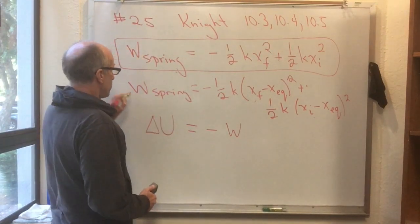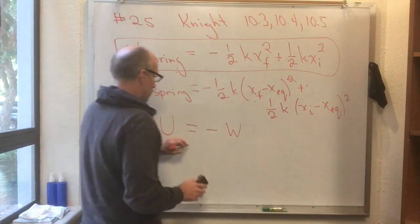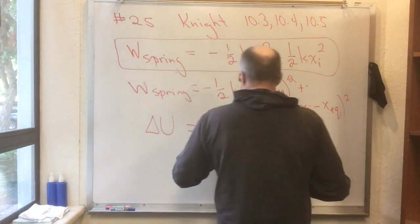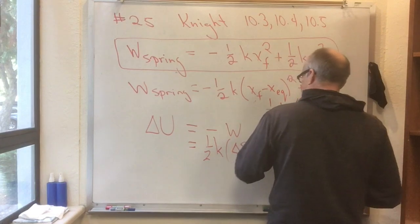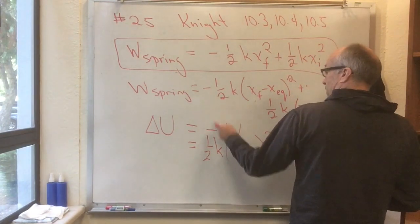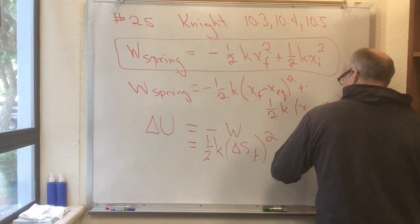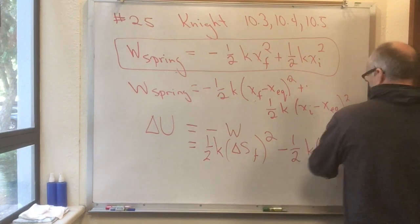Well, okay, we know what the work done by the spring on a block is, it's this. So we multiply through by minus one, and now we have one half k delta s final squared. And now that minus sign cancels that minus sign. This minus sign comes here and I have minus one half k delta s initial squared.